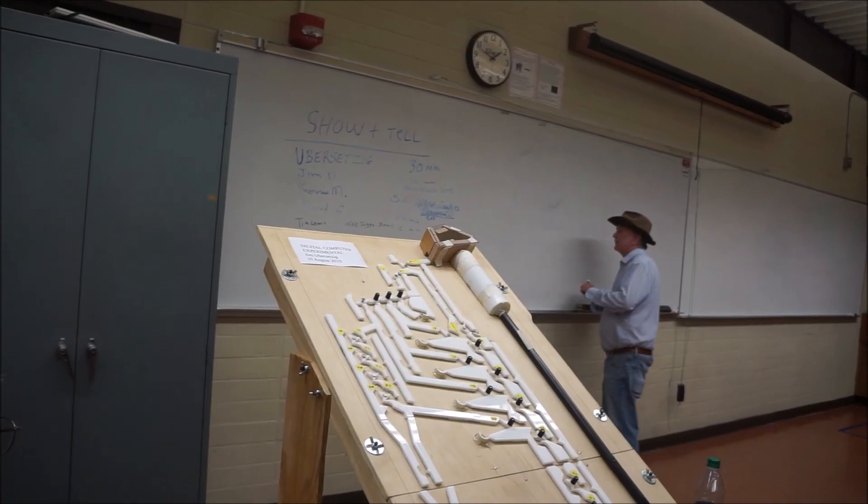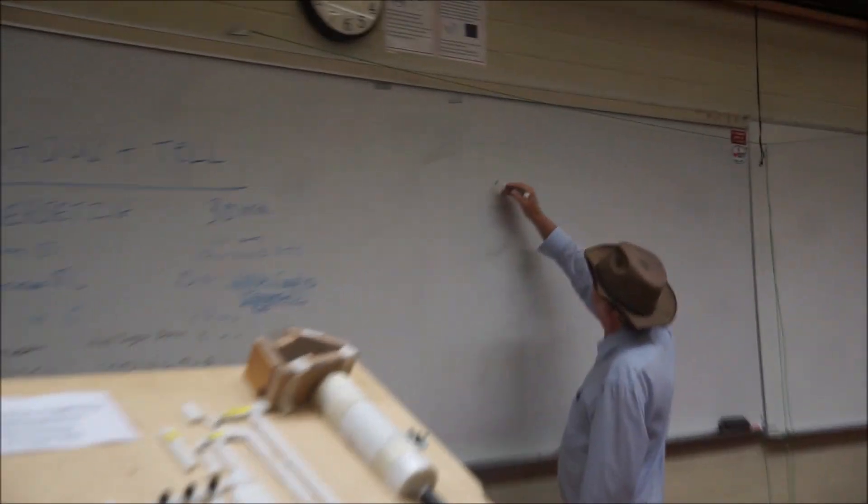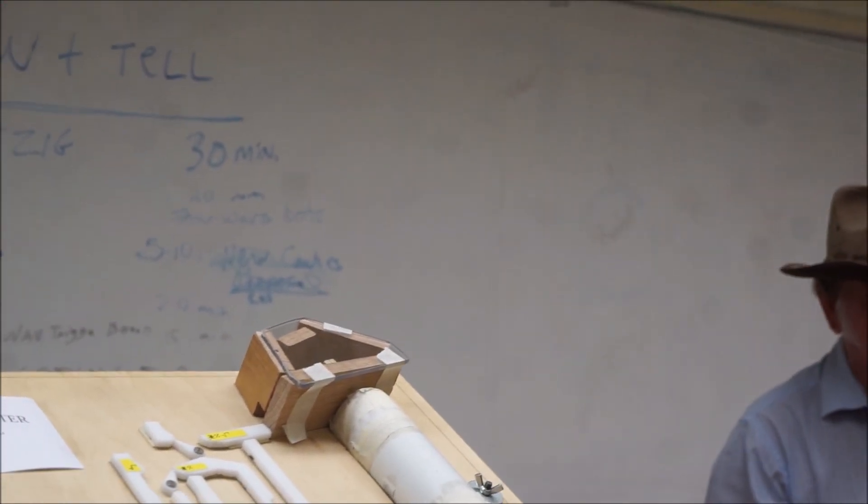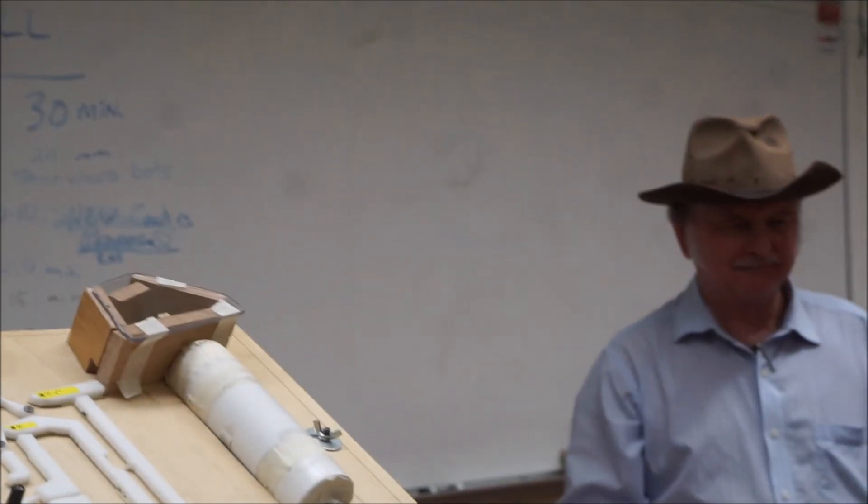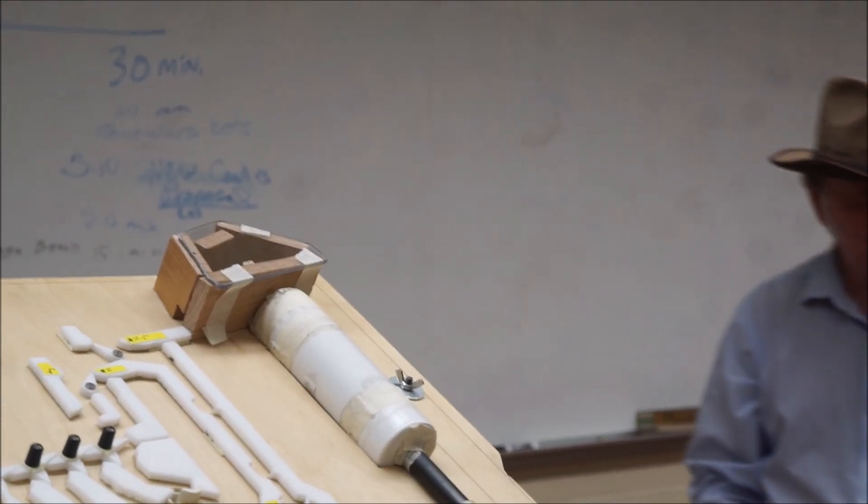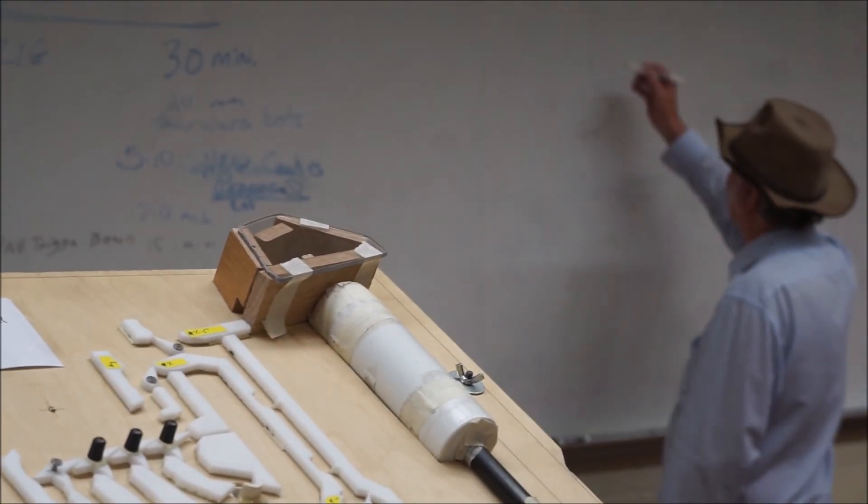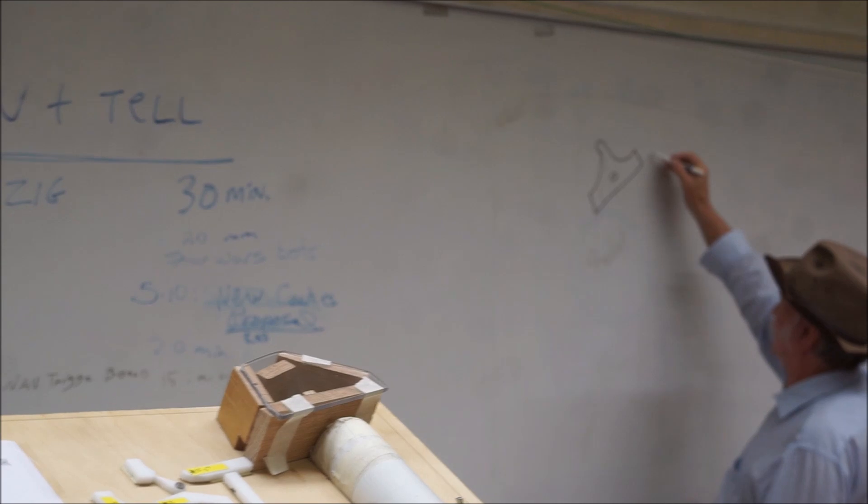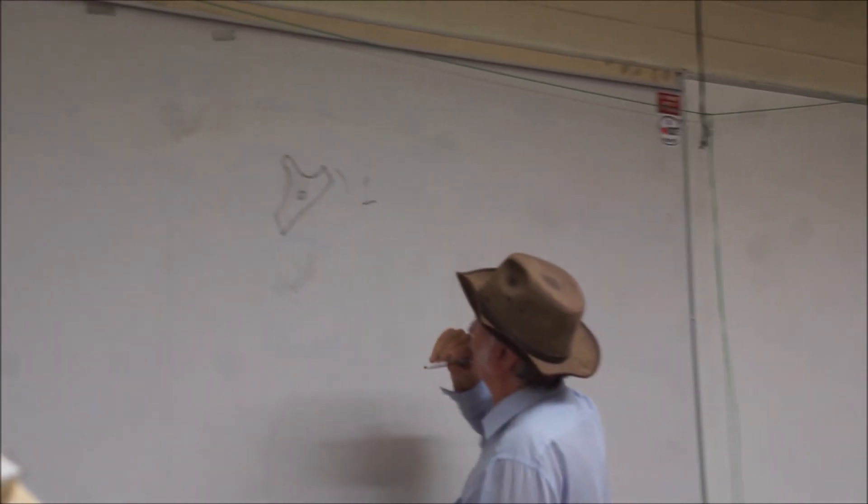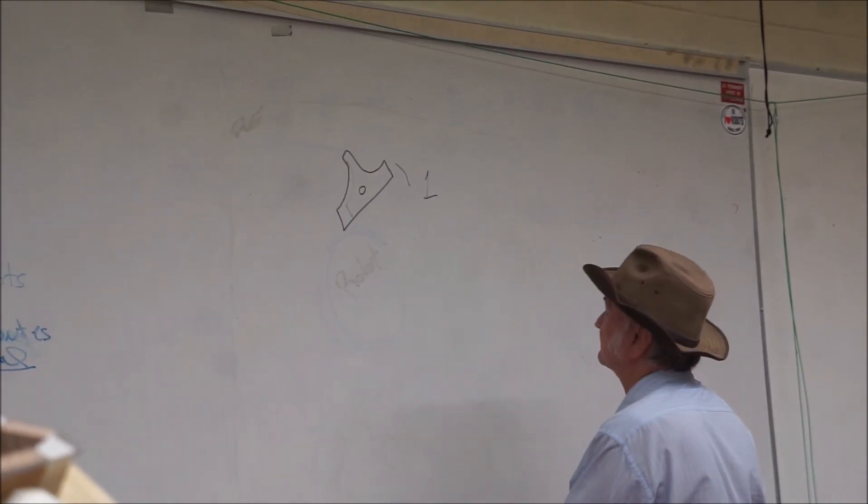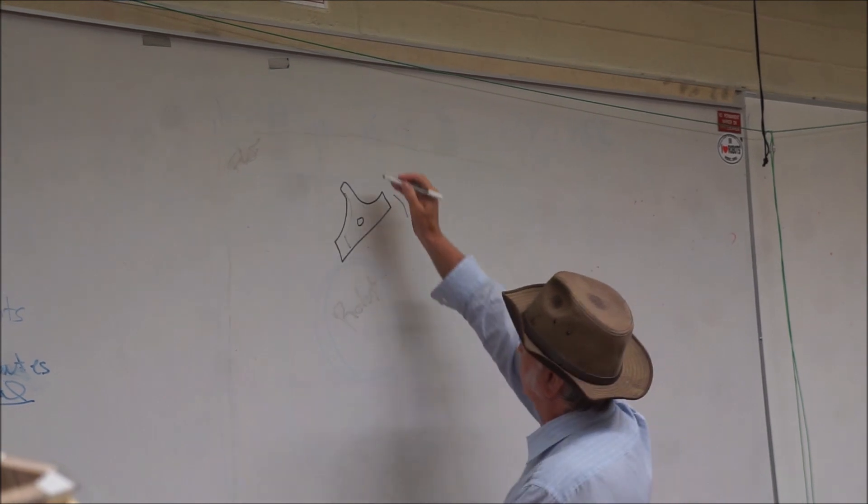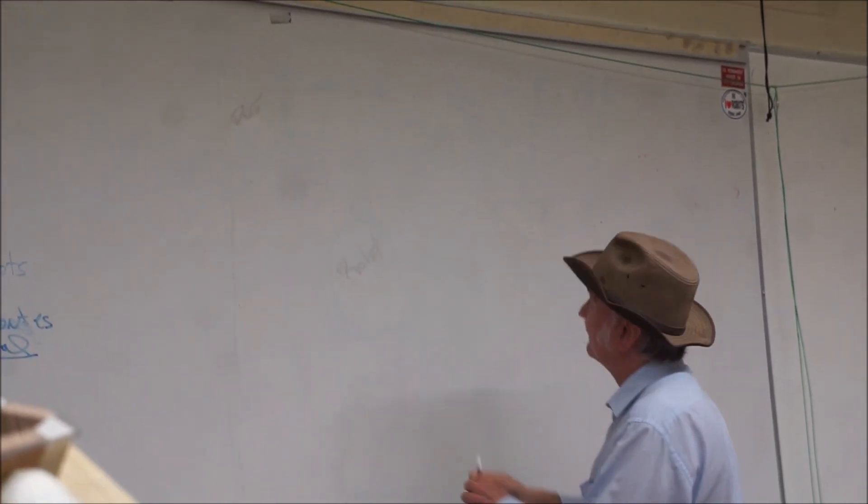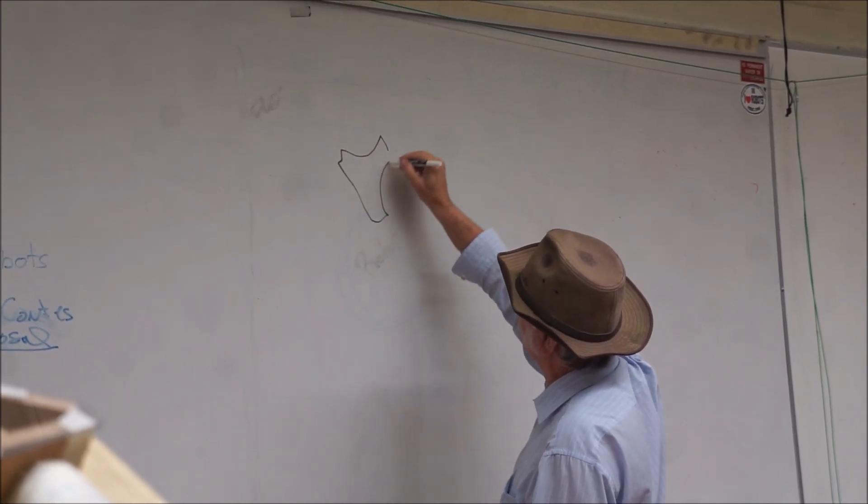The organization of this computer is, it has memory elements that look something like this. When it tips to the right, it's a logic one. It would then tip the other way, and it tips because a ball comes down from above. The ball represents the clock pulse. When the ball strikes it, it rotates to the other position, like this, representing a logic one.